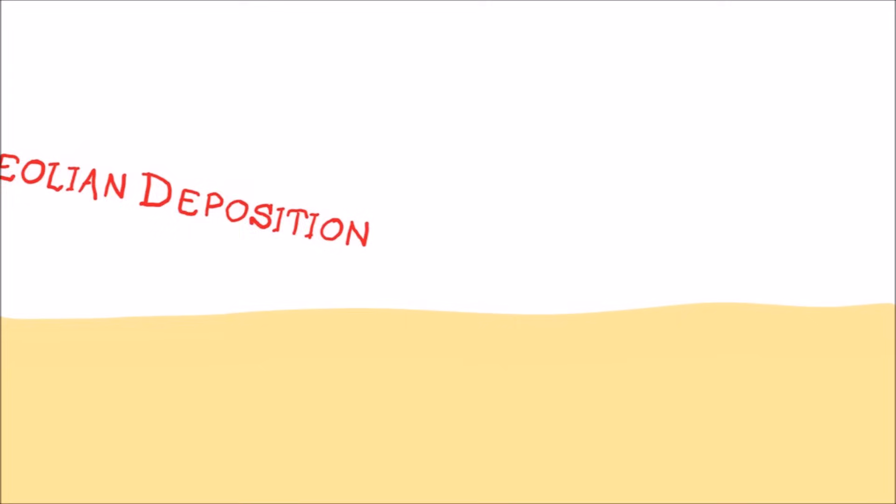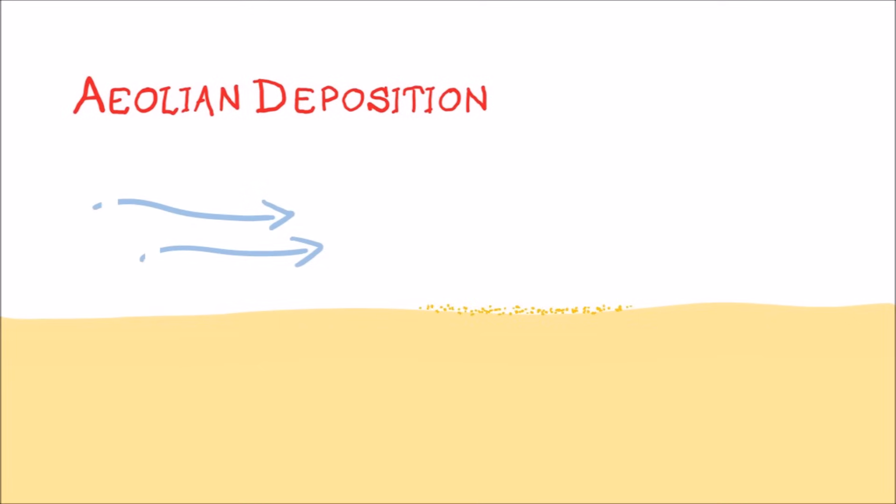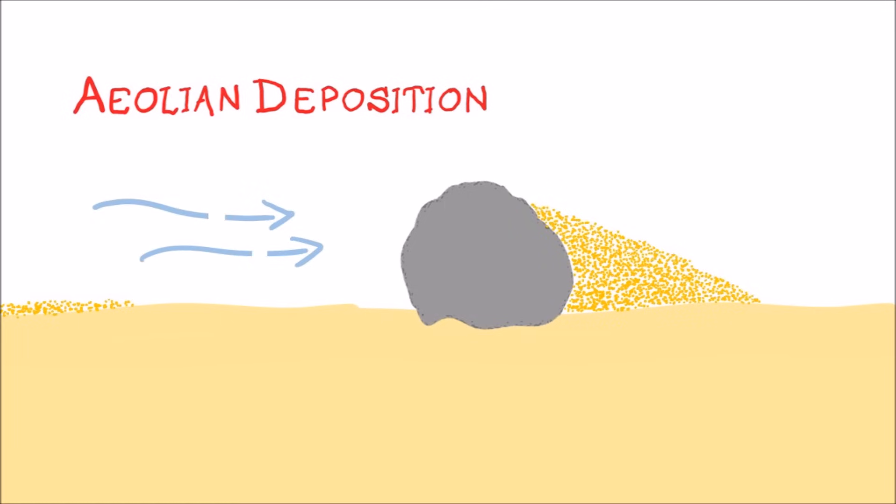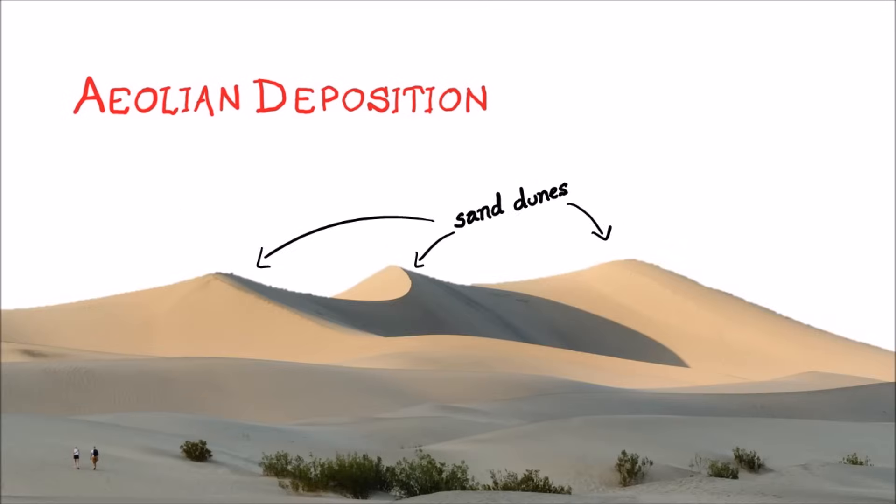When the wind loses energy, it deposits the material it's been carrying. This can happen when the wind speed drops or it meets an obstacle. Fine sediment, known as loess, can build up in the sheltered area behind rocks and vegetation. As the obstacle gets larger, more material is deposited. This is how sand dunes can start to form.